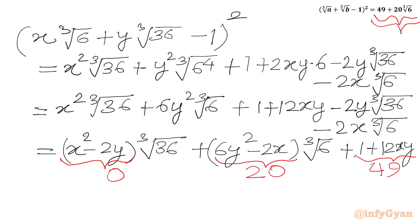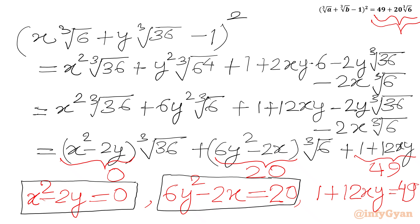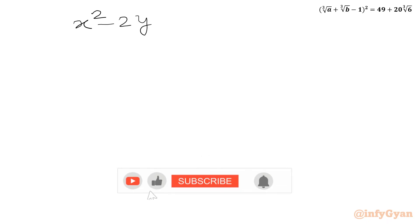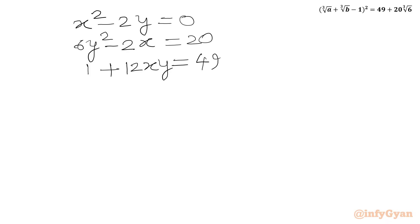Let us create a system of equations. Equation 1: x² minus 2y equals 0. Equation 2: 6y² minus 2x equals 20. Equation 3: 1 plus 12xy equals 49.